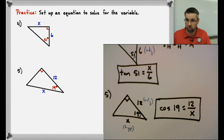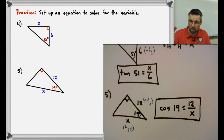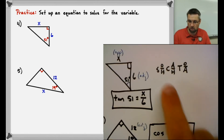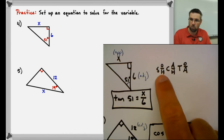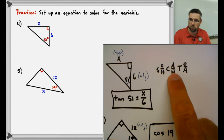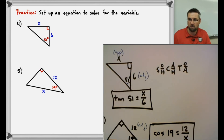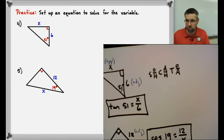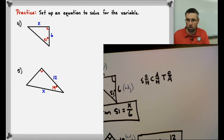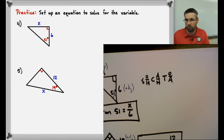So all we were doing today was identifying our opposite, our adjacent, and our hypotenuse, and then setting up equations according to SOHCAHTOA. We've got to know what sine is, what cosine is, and what tangent is. If you have any questions, please comment below or wait until we get to a tutoring session. I hope you found this helpful — I will talk to you all later.